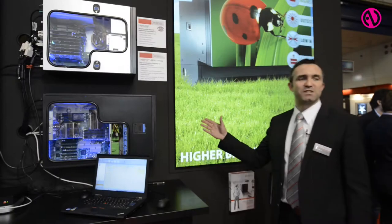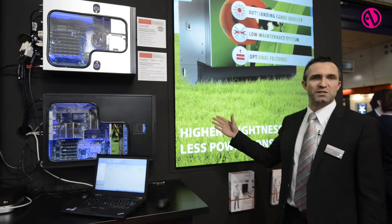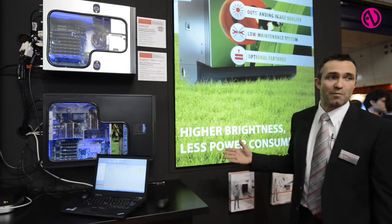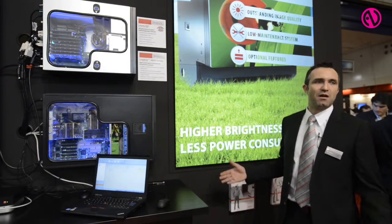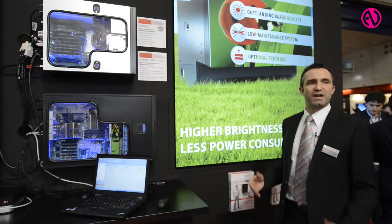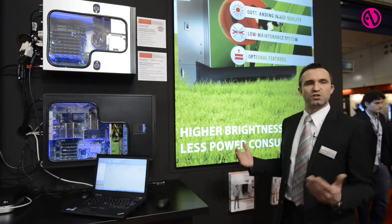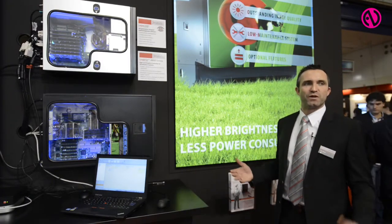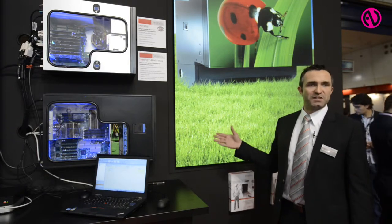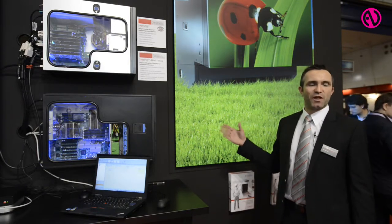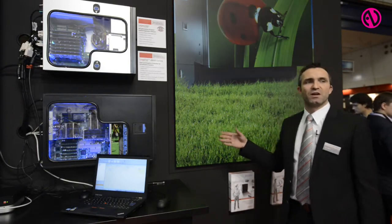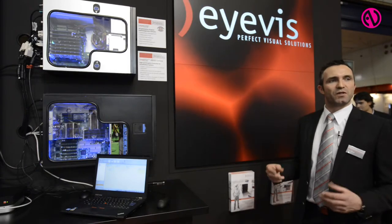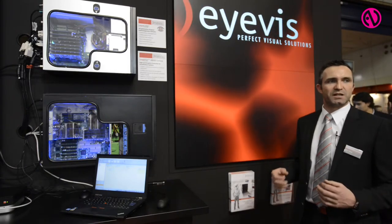What we have here is the latest version of our EC Cube series — rear projection cubes especially for applications in control rooms, but also in broadcast applications in a TV studio or in presentation rooms in conference areas. It's the EC 1000 series, in which we updated the projection system with high brightness LED components.